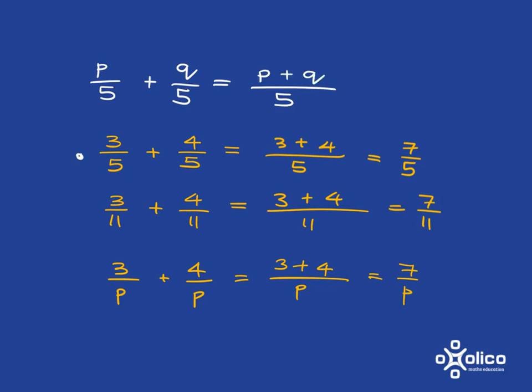And here is your final answer, p over 5 plus q over 5 is just p plus q over 5.